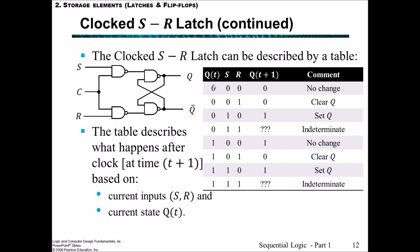This truth table shows the possible values of Q at time T, set and reset, and then what would be the next state Q at time T+1. When the state at time T is 0 and set and reset is 0, then the next state is also 0. When the state is 0, set is 0, and reset is 1, then we get clearing of Q — the next state Q(T+1) is 0. This is no matter what the previous state is; this table shows, given a certain state and certain inputs S and R, what is the next state.